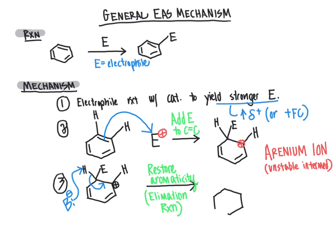The rate-limiting step of this process is step two of the mechanism, because that was the step that generated the unstable arenium intermediate. Once we generate the arenium intermediate, the rest of the reaction takes place very readily. So now we have our electrophile bonded to the aromatic ring and aromaticity has been restored. The end result is that we have replaced one of the protons from the aromatic ring with an electrophile. We'll spend the next several videos looking at specific electrophiles that we can bring into these EAS reactions.